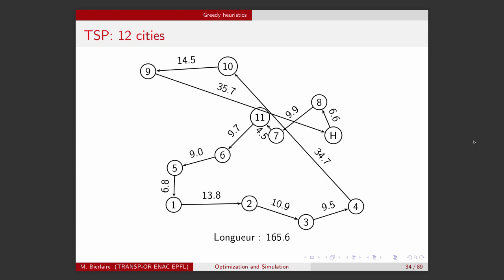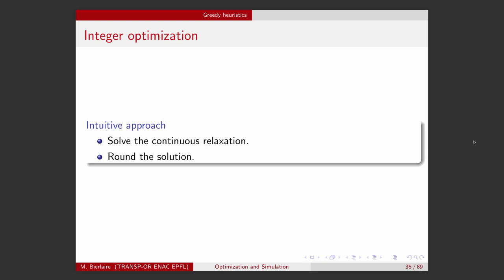So what would be a greedy way to solve an integer optimization problem? Well, an intuition would be to say, let's consider what we call the relaxation. What is the relaxation? This is the linear optimization problem where we ignore the fact that the variables must be integer. Why? Because this is a linear optimization problem and we know how to solve it. We have exact methods to solve it efficiently. The simplex algorithm.